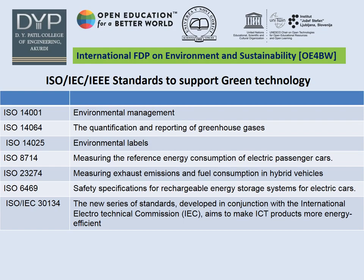There are different ISO standards: ISO 14001 covers Environmental Management; ISO 14064 covers quantification and reporting of greenhouse gases; ISO 14025 covers Environmental Labels; ISO 8714 measures the reference energy consumption of electric passenger cars; and ISO 23274 measures exhaust emissions and fuel consumption in hybrid vehicles.